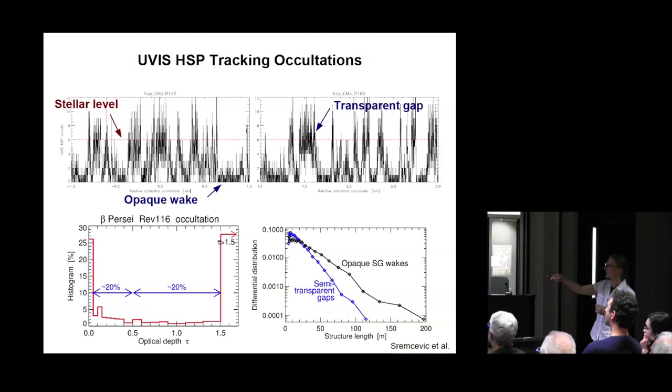This is as I said down to meter scale. This is the highest resolution of the rings that we have currently. It also tells us that about 30% of the rings is empty. There's just empty space. Essentially if it's wide enough, just go through.